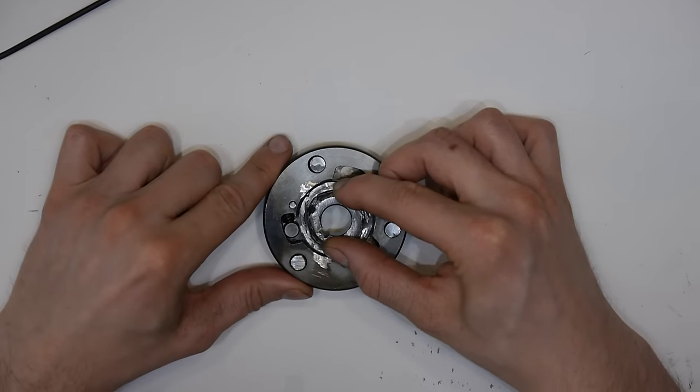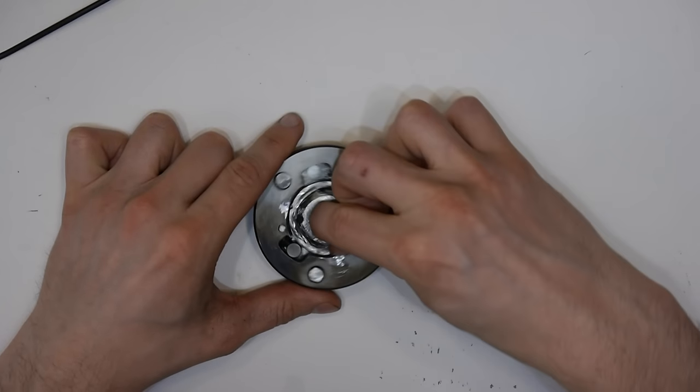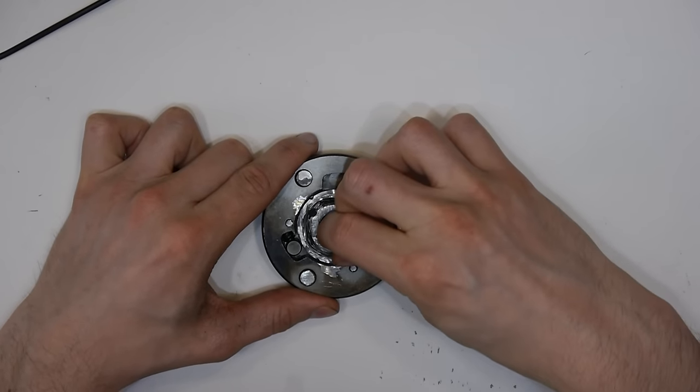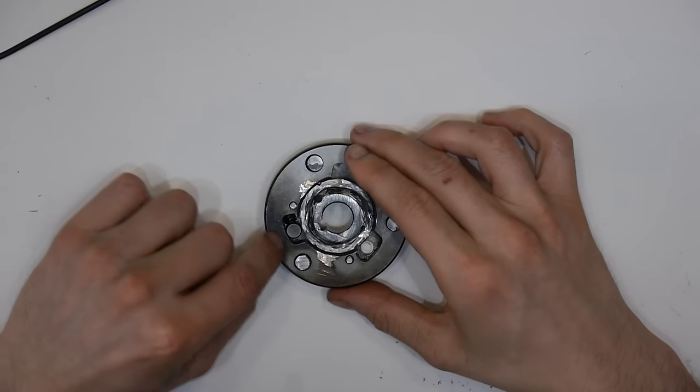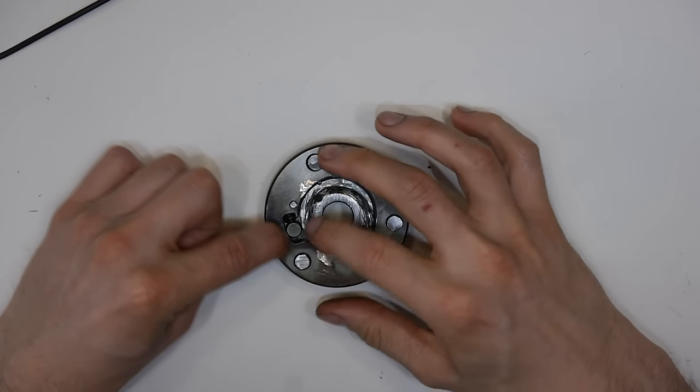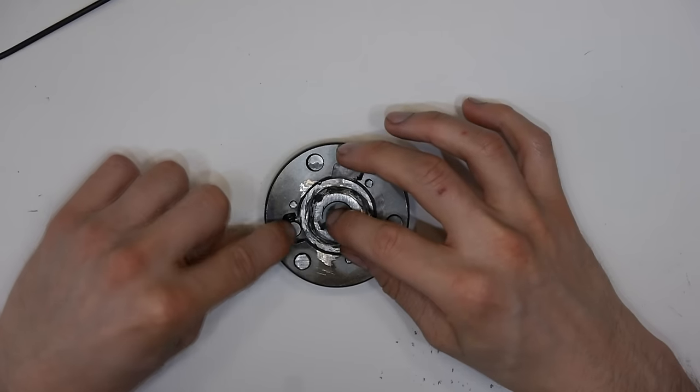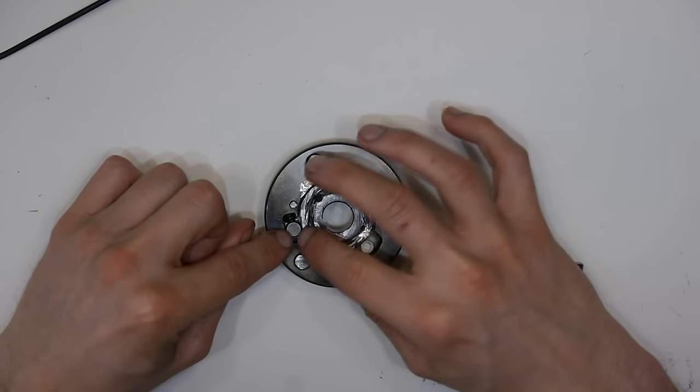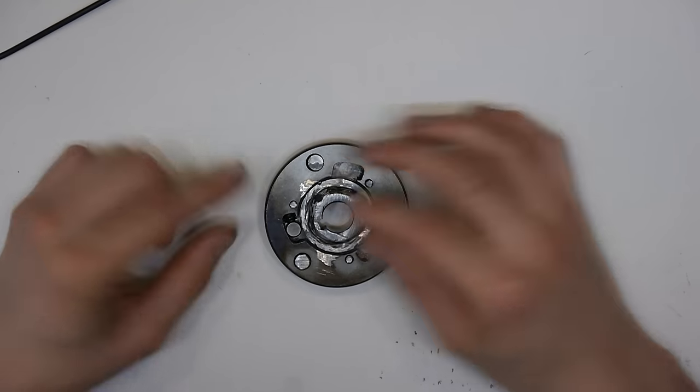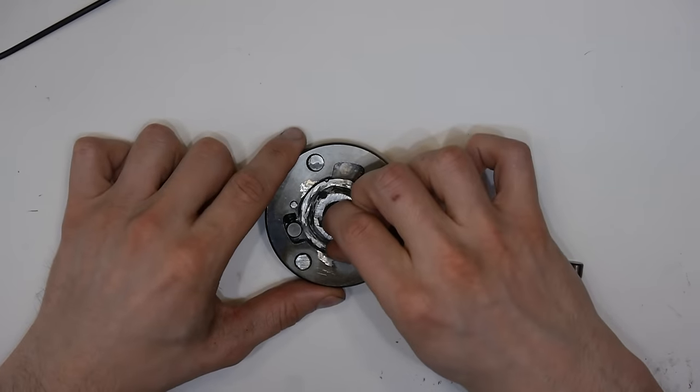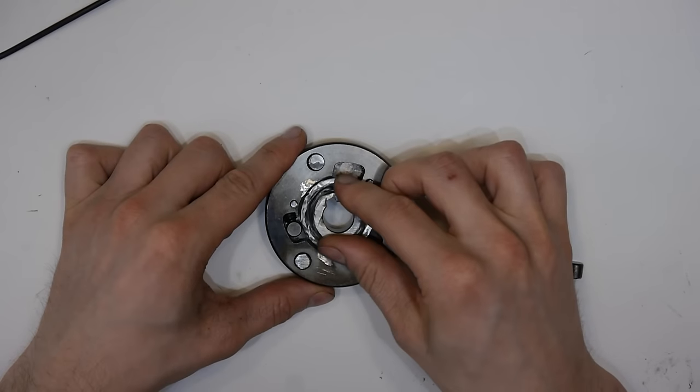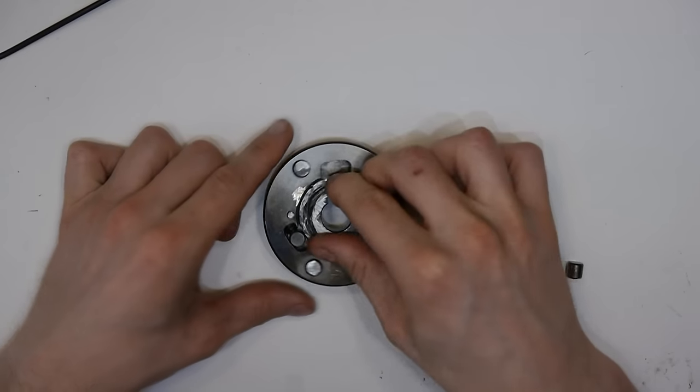But in the other direction you can't rotate it. It blocks instantly because this angle here forces the bolt to pressure between these two sides. And so it rotates in one direction and blocks in the other.